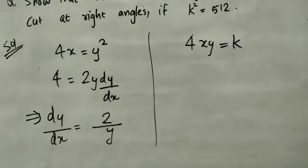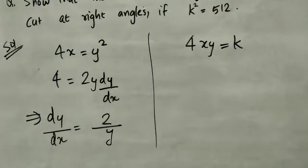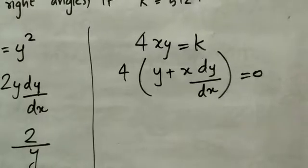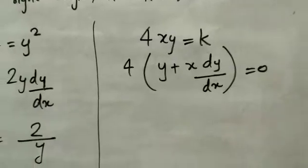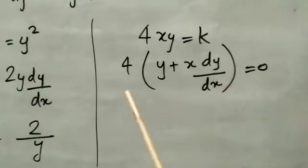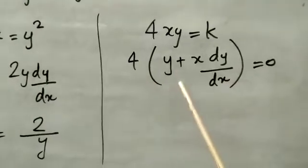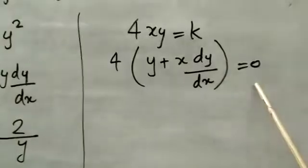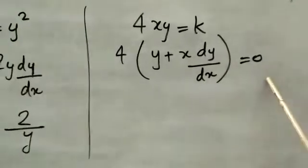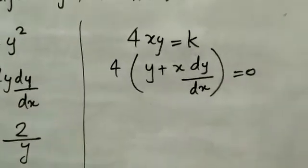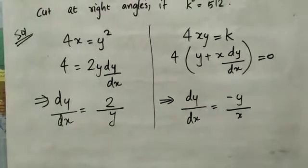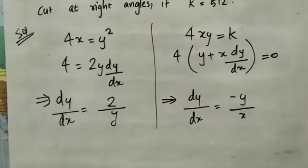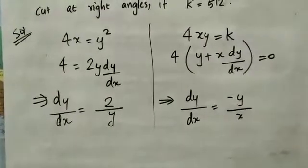Similarly, differentiate the second curve 4xy = k with respect to x. Applying the product rule: 4 times (1·y + x·dy/dx) = 0, since k is a constant. Therefore dy/dx = −y/x.